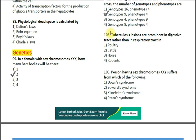Question number 105: Tuberculosis lesions are predominant in the digestive tract rather than the respiratory tract in — option 1: poultry; option 2: cattle; option 3: horse; option 4: rodents. The answer is cattle. In cattle, tuberculosis is caused by Mycobacterium bovis. Tuberculosis is primarily a disease of the respiratory tract, but in cattle when caused by Mycobacterium bovis, the lesions are seen in the digestive tract.